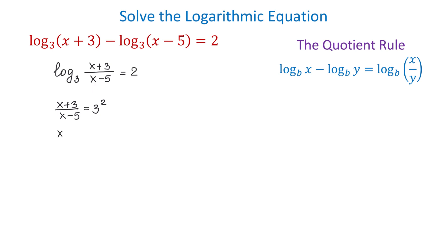Then, 3 to the second power equals 9, so x plus 3 over x minus 5 equals 9.